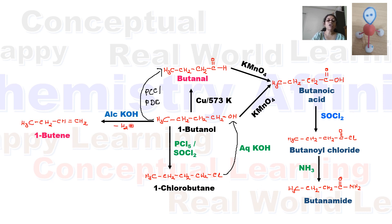Alcoholic KOH acts as a strong base, so in its presence, elimination reaction dominates. That's why 1-chlorobutane gives 1-butene under these conditions.